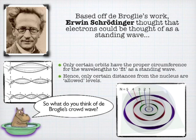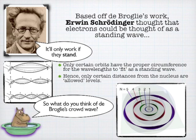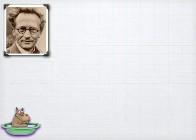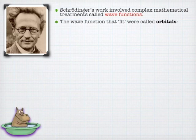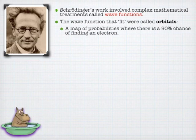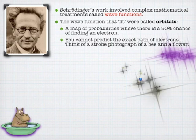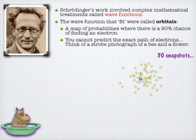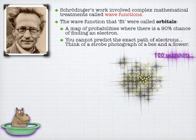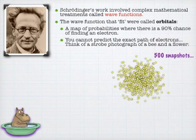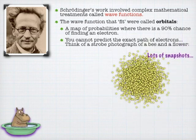Schrödinger built off the work of de Broglie to give us a viable model of the atom that explains quantum energy levels and quantum leaps. What Schrödinger did was build his work off very complex mathematical equations called wave functions. The wave functions had certain places called orbitals, where you'd have mathematically a 90% chance of finding an electron. There's also Max Born, who did a lot with probability waves. I'll oversimplify this to a bee around a flower: if you took pictures of a bee buzzing around a flower and superimposed them, you'd have a good idea of where that bee would be — you don't know exactly, but you'd have a probability map.